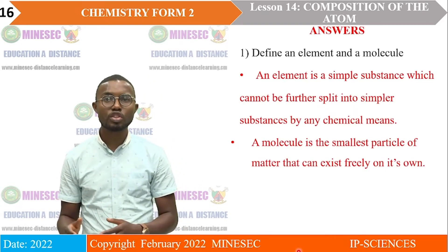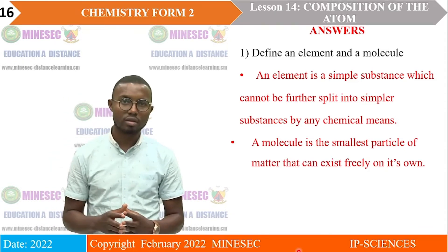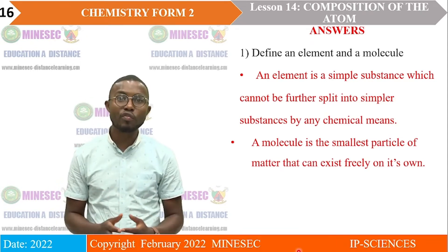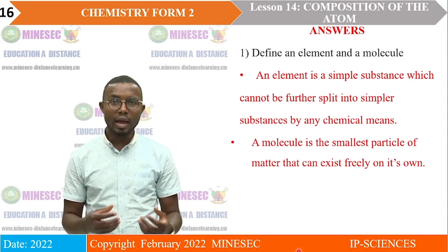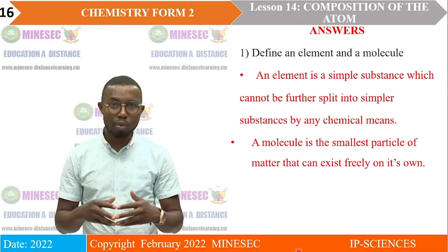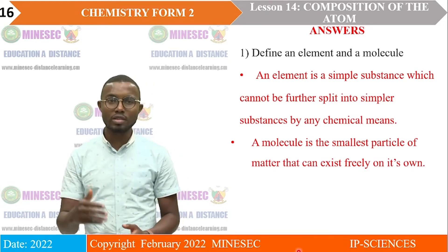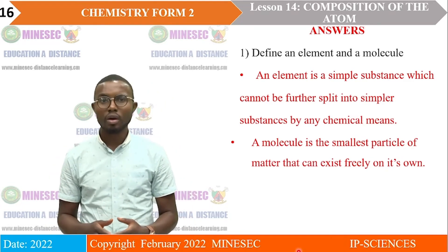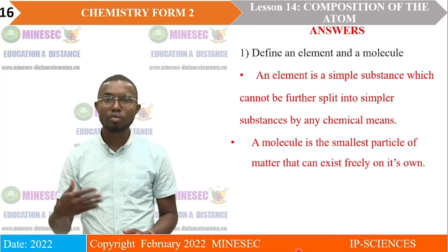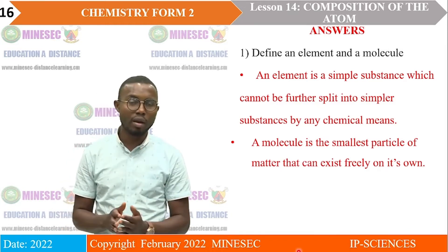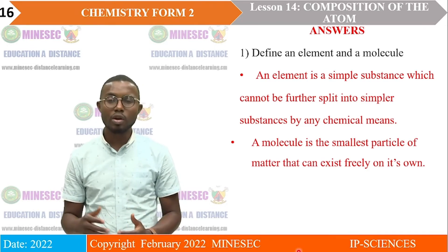For the first question: an element is a pure substance which cannot be further split into simpler substances by any chemical means. A molecule is the smallest particle of matter that can exist freely. We can have a molecule of an element and a molecule of a compound. For example, chlorine: the atom is Cl but the molecule is Cl2. Similarly for hydrogen, the atom is H but the molecule is H2.